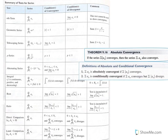In addition to the summary table, we also learned theorem 9.16, which tells us that if the corresponding absolute value series converges, then the original signed series must also converge — we call that absolutely convergent. On the other hand, if the absolute value series diverges but the original signed series converges, we say the signed series is conditionally convergent.